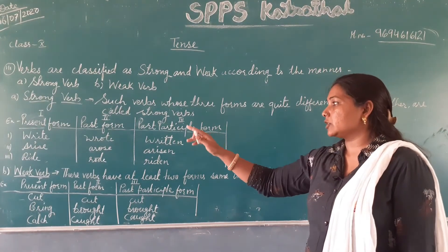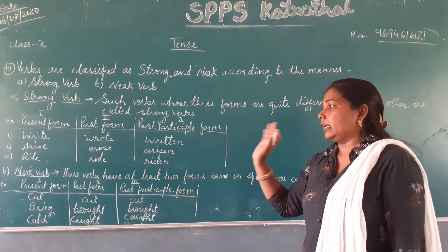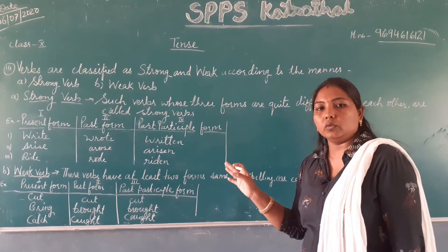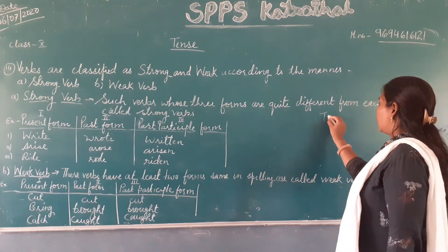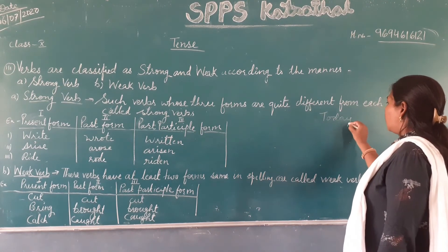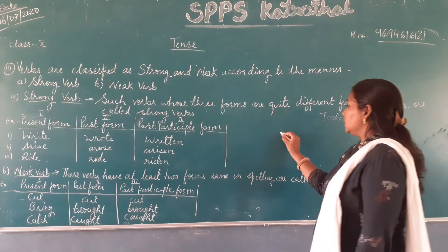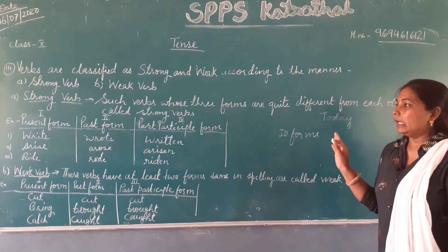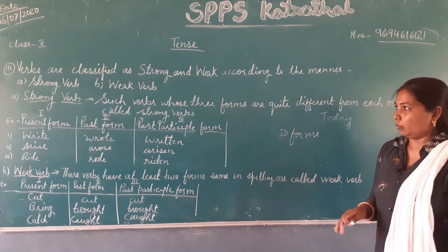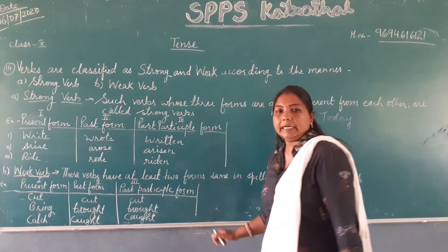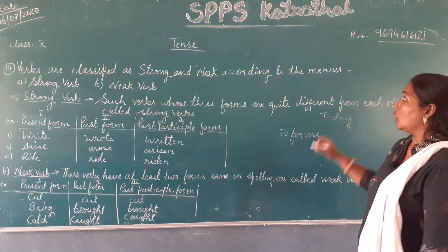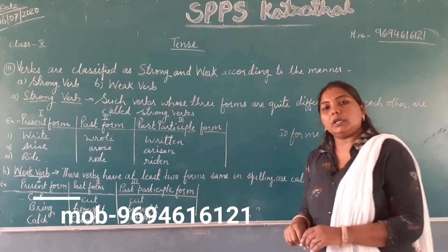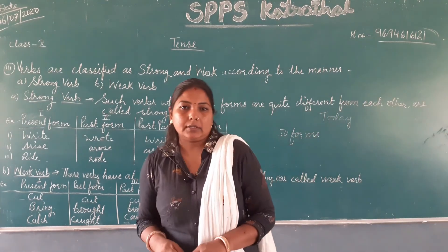So to summarize: strong verbs are those in which all three forms are different, and weak verbs are those in which at least two forms are the same. Your homework for today is to write 50 forms of verbs in your notebook. If you have any problem related to this topic, you can WhatsApp on the given number. Please write down the work in your notebook. Thank you.